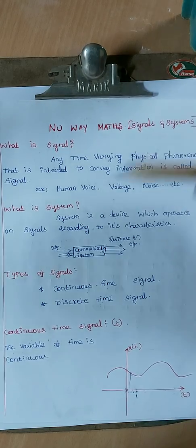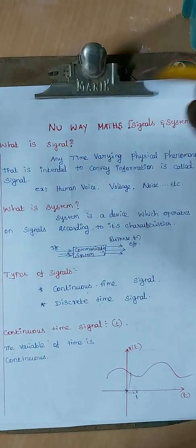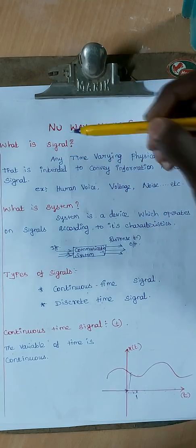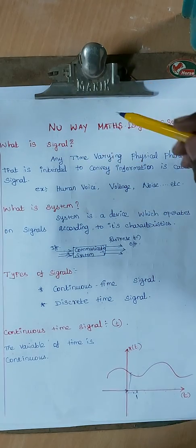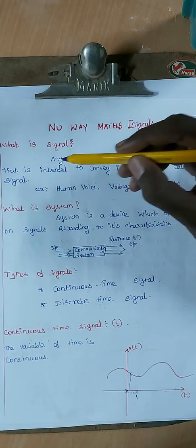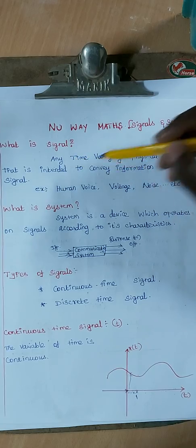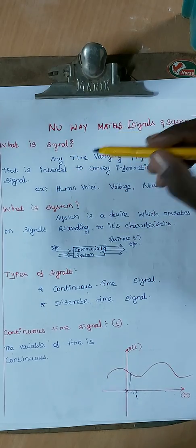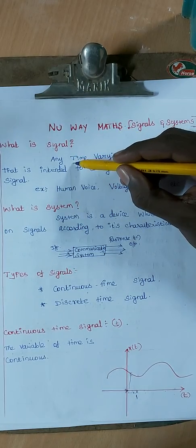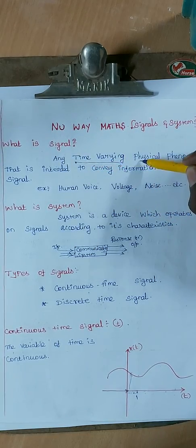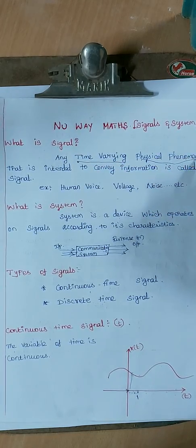Now let's go to the topic. What is a signal? Any time-varying physical phenomenon that is intended to convey information is called a signal. The key idea is that it is a time-varying physical phenomenon.